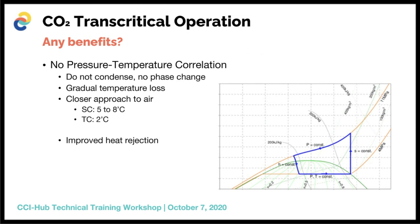A lot of people ask whether there are benefits to operating a plant in transcritical mode. There actually are. The first benefit is that there is no pressure-temperature correlation — you do not condense your refrigerant on the high side, so there is no phase change. Instead, there is a continuous drop in temperature as it goes down according to ambient conditions, giving you the ability to have a closer approach when working in transcritical mode.